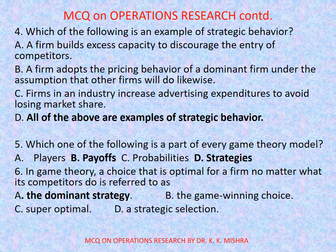Question number 5: Which of the following is a part of every game theory model? Options are: a) players, b) payoffs, c) probabilities, d) strategies. Correct option is d) strategies. Viewers, let me tell you that by and large the correct options are highlighted here; in case of any discrepancy found, it will be corrected through my narration.